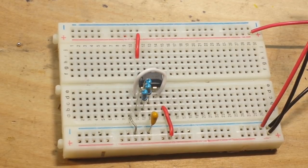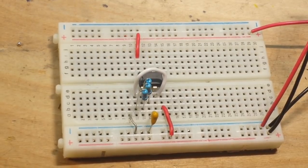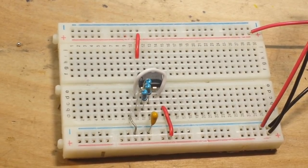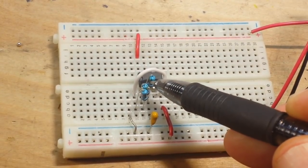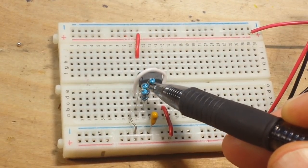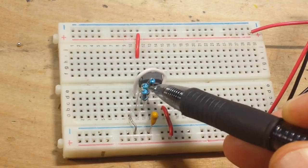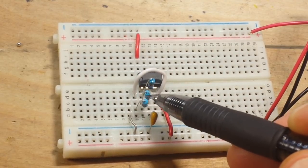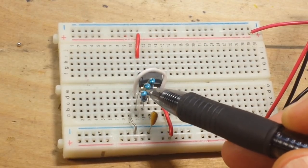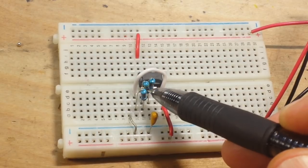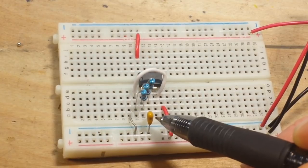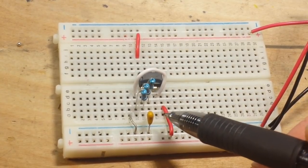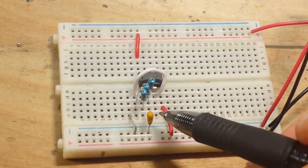First of all, I was amiss in not giving you guys the values for these resistors. Our feedback resistor is 47k, R1 is also 47k, and R2 is 20k. The capacitor is 0.1 microfarad.